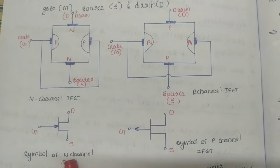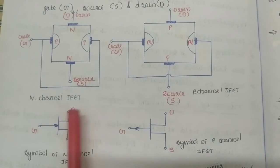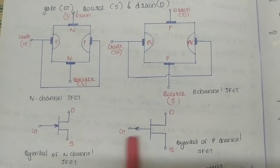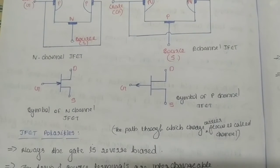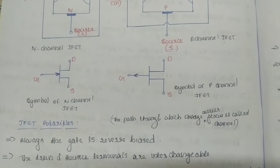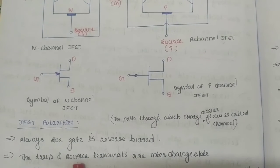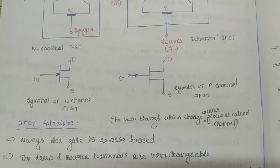This is the symbol of the N-channel JFET. It has an arrow mark and three terminals: drain, source, and gate. The arrow mark indicates the polarity. The gate is reverse biased, and the drain and source terminals are interchangeable.